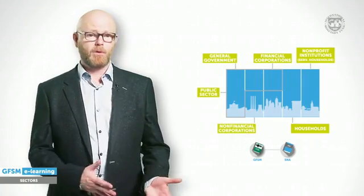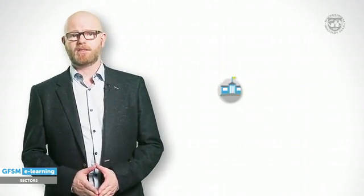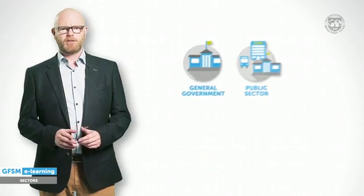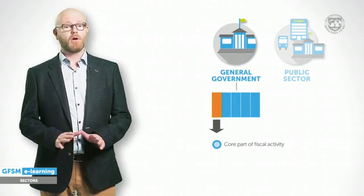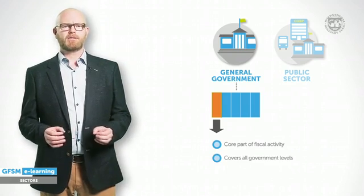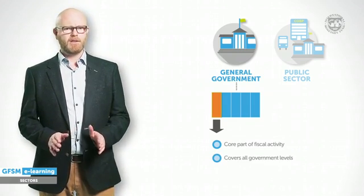In many countries, the National Statistical Agency maintains a central register of all entities constituting these economic sectors. For fiscal analysis, the two relevant concepts are the general government and the public sector. The general government sector covers the core part of fiscal activity and typically involves units providing public goods for free or almost free. The term 'general' means that all government levels are covered, irrespective of the institutional, legal and political structure in a country. In other words, general government comprises the central, regional, provincial and local governments, as well as social security funds. It may also include universities, hospitals, schools and other government units that conduct their business on a non-commercial basis.